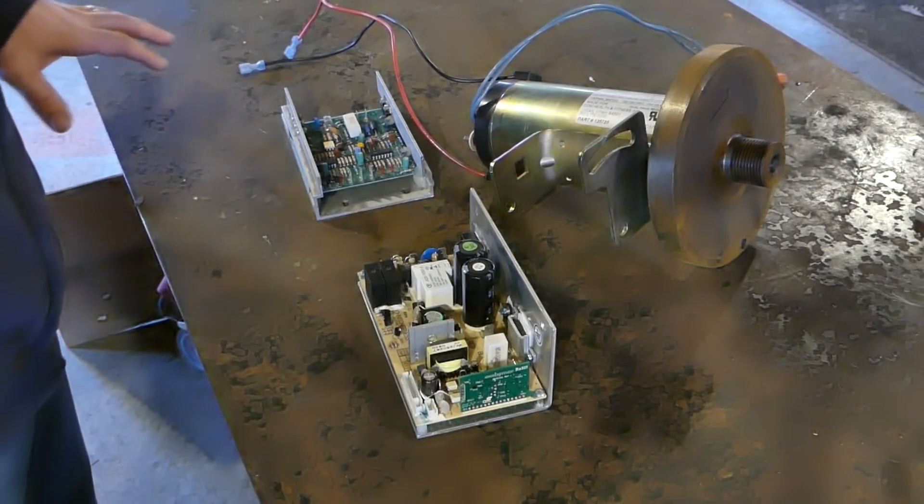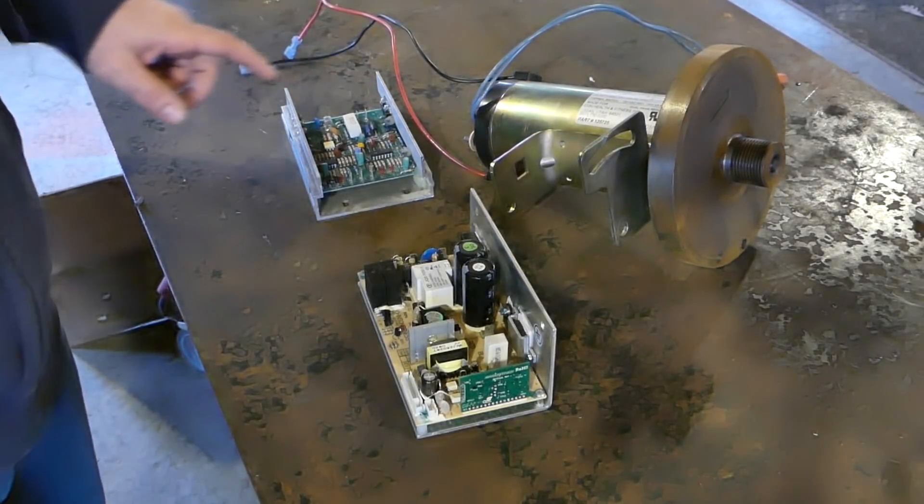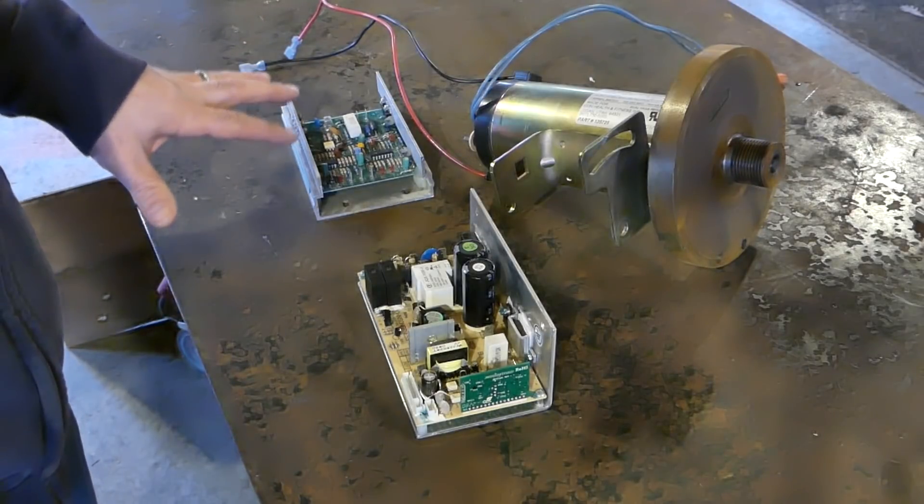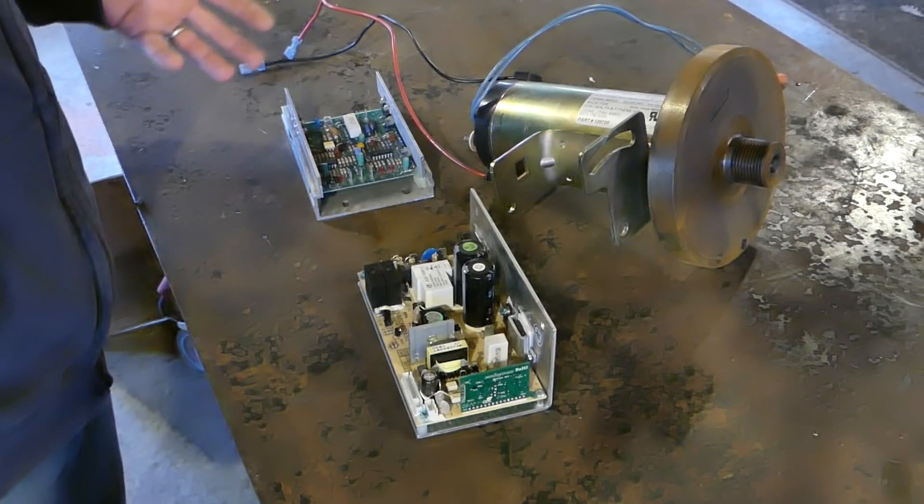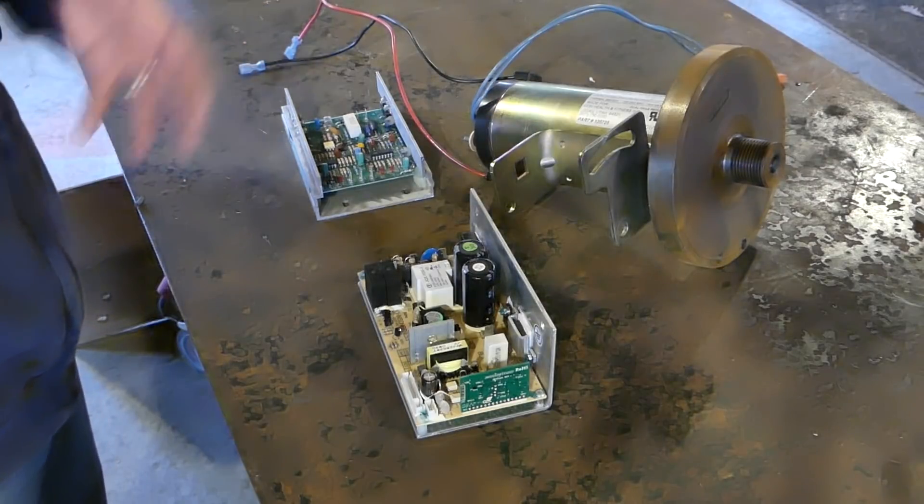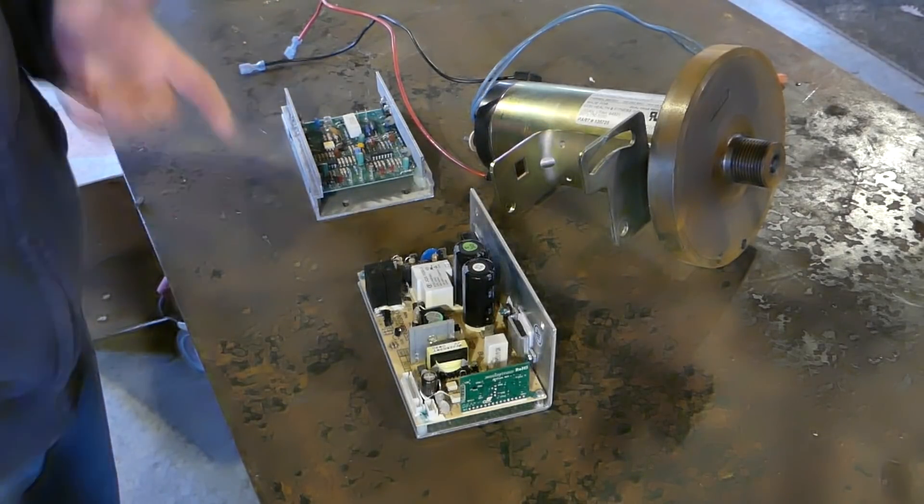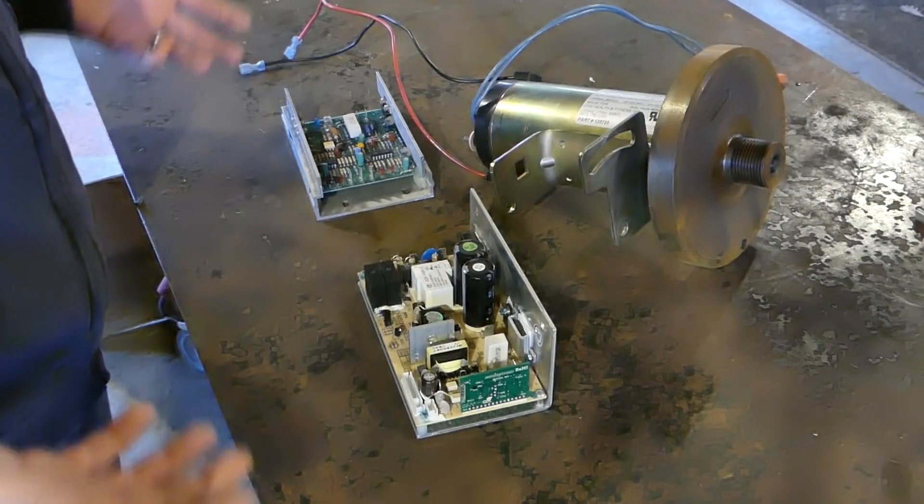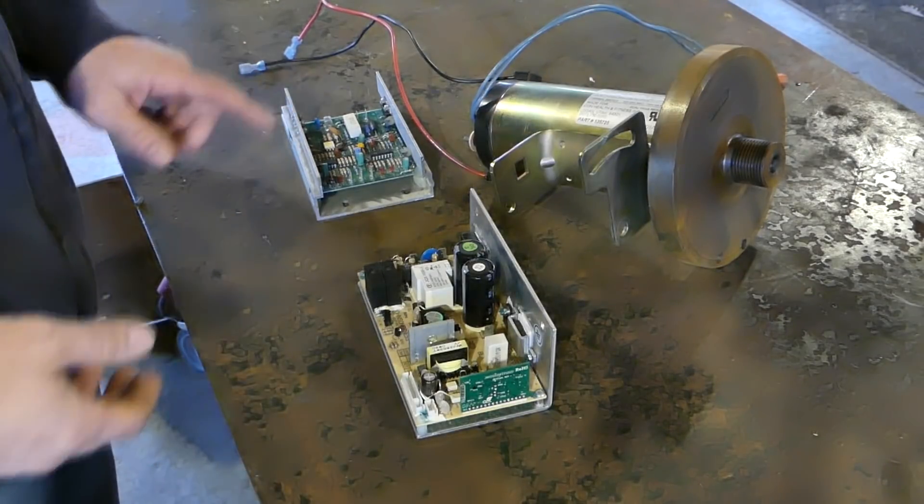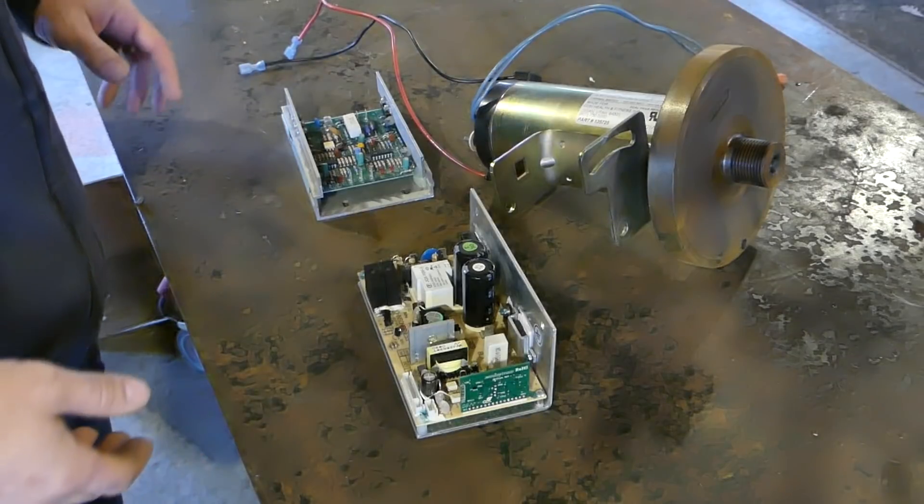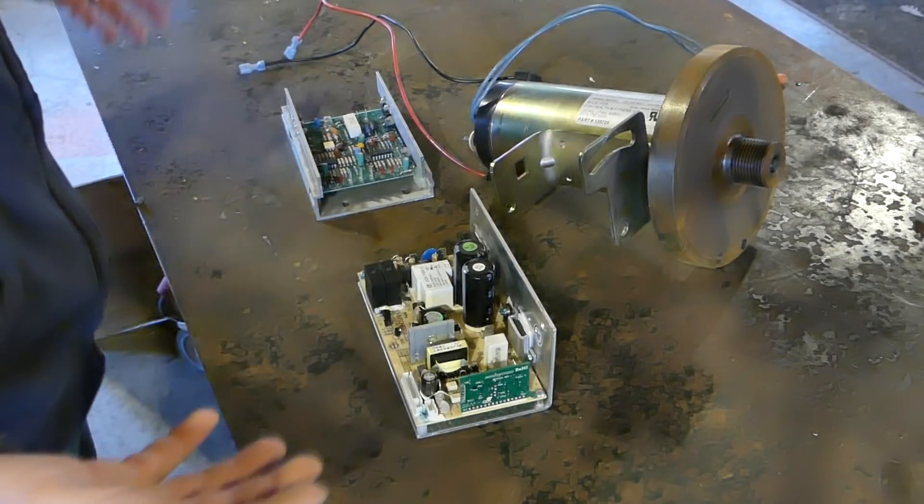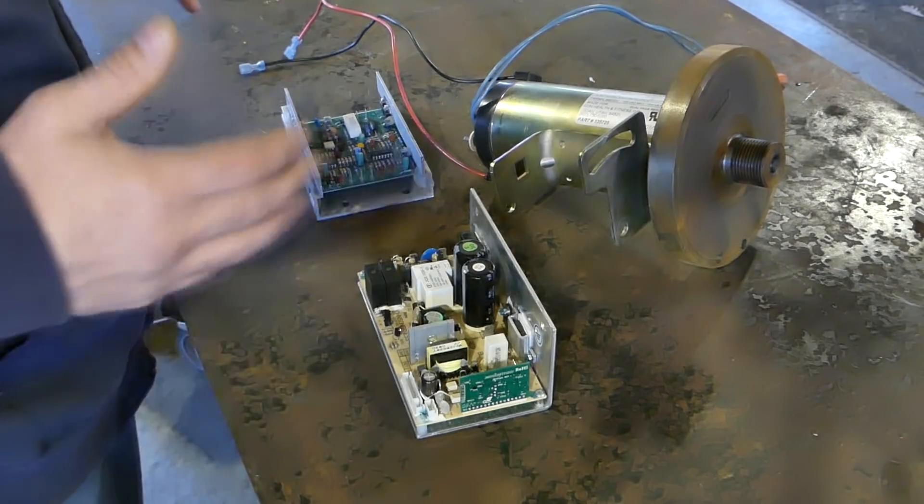So I told you guys I was going to make a video about how to use these treadmill motors without having to use these motor boards. Why would you want to do that? Well, say you got a treadmill from wherever, you get it home, you rip it apart, and you find out that the treadmill motor board is fried. You don't want to shell out $120 for a new one of these boards, and you don't want to get a used one on eBay. There is an option.